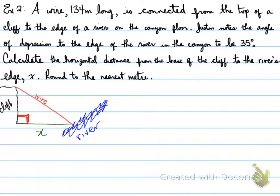Example number two, you're asked the following questions. A wire 134 meters long is connected from the top of a cliff to the edge of a river on the canyon floor. Justin notes the angle of depression to the edge of the river in the canyon to be 35 degrees. Calculate the horizontal distance from the base of the cliff to the river's edge x, round to the nearest meter.